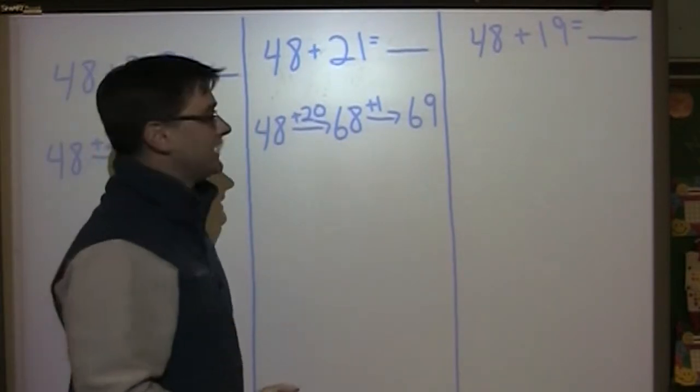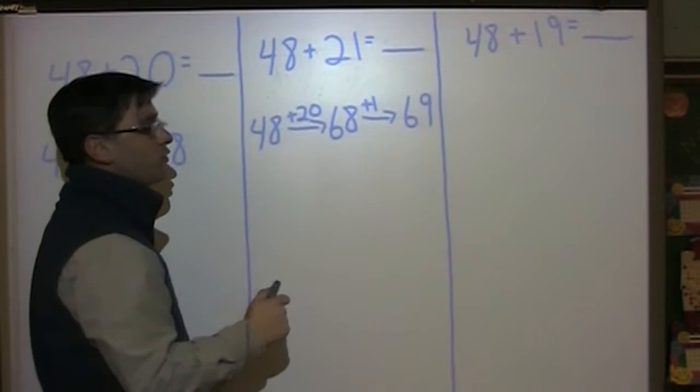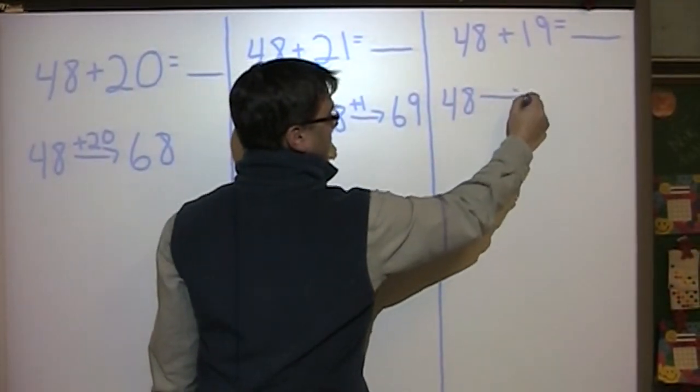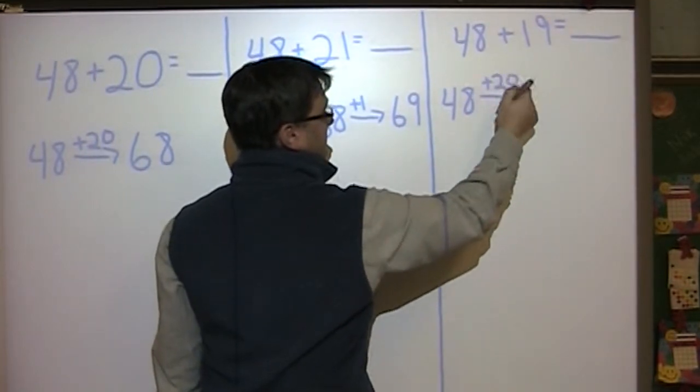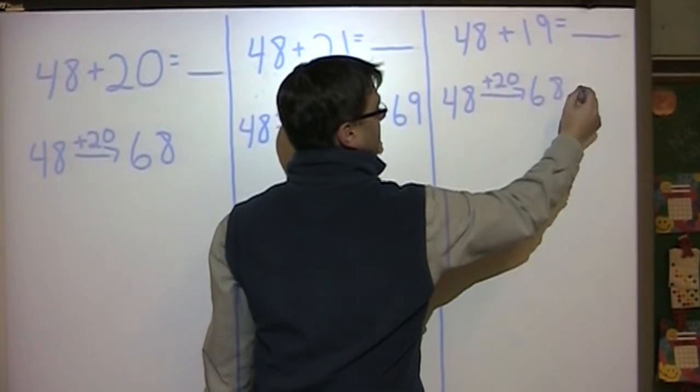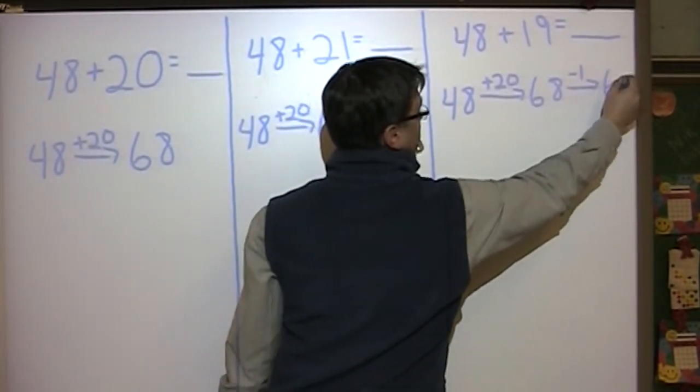48 plus 19 is a little bit different. We can still use our friendly number of adding 20. We can do 48, arrow, and we add 20. And since 19 is one less than 20, we can do our arrow and subtract one to get 67.